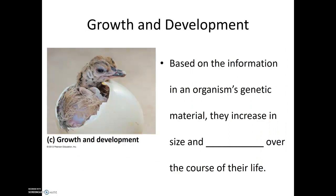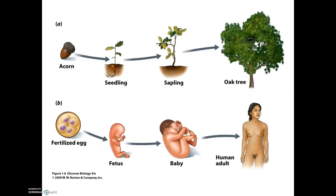Another characteristic of all living organisms is that they will grow and develop over the course of their life. This growth and development is based on the organism's genetic material — they will increase in size and complexity over the course of their life. This is seen in a tree going from seed to seedling to sapling to oak tree. It's also seen in complex multicellular organisms like ourselves. Each of us started as a single fertilized egg, or a zygote, and through cell division and development we went from an embryonic stage to a fetal stage, to birth, then adolescence, up through adulthood. This increase in size and complexity is not evolution, and it's not uncontrolled — it is simply the growth and development that happens to an organism over the course of its life.